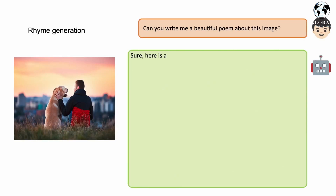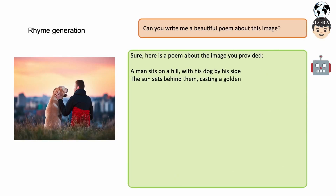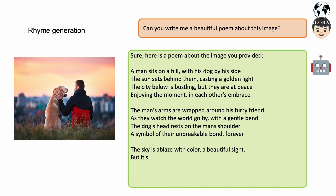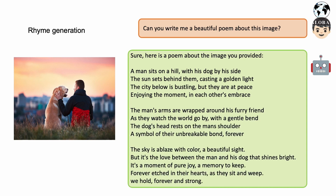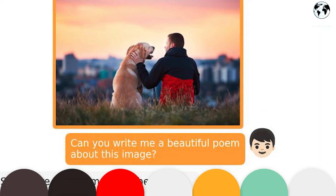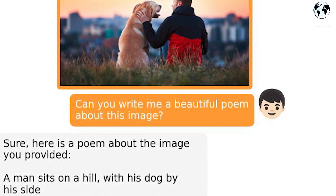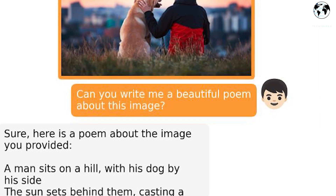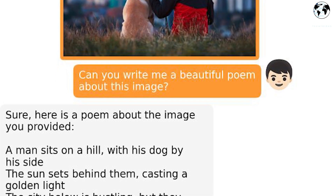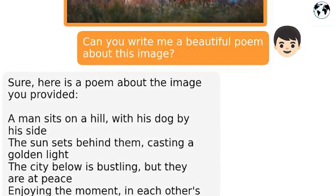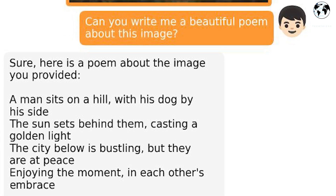In another captivating example, a user requested Mini GPT-4 to compose a beautiful poem based on an image depicting a man sitting on a hill with his dog by his side. The AI then generated the following verse: 'A man sits on a hill with his dog by his side. The sun sets behind them casting a golden light. The city below is bustling, but they are at peace, enjoying the moment in each other's embrace.'